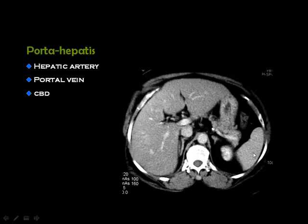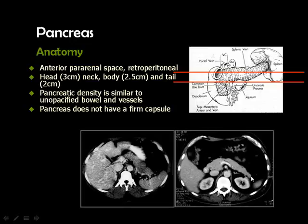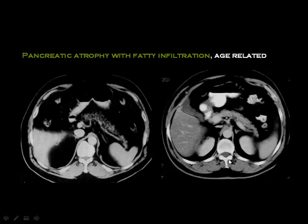A fatty liver appears slightly darker than the spleen on CT. The aorta, IVC, and diaphragmatic crura on both sides are identifiable. The pancreas lies obliquely in the abdomen, so scanning from top to bottom you first encounter the pancreatic body, then the head. In some people, the pancreas lies horizontally and the entire pancreatic tail, body, and head can be seen in the same section. The splenic vein lies posterior to the pancreatic body.